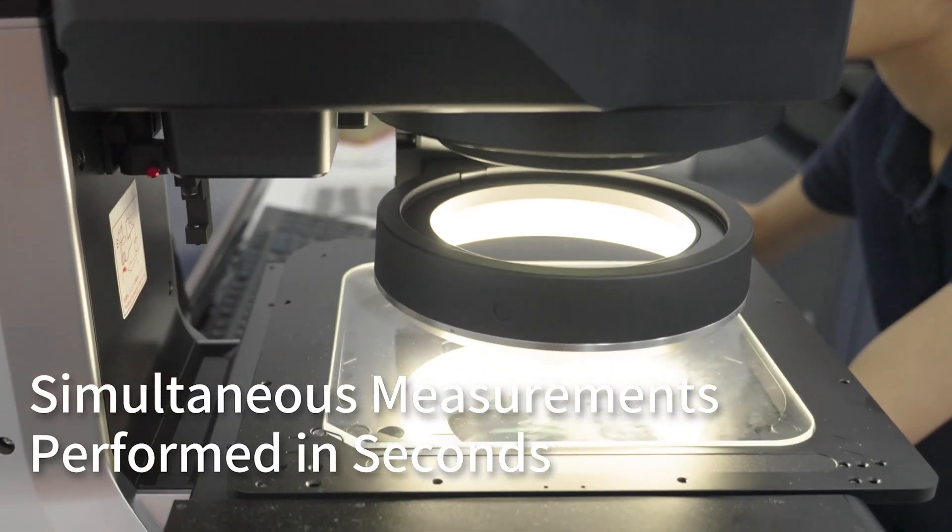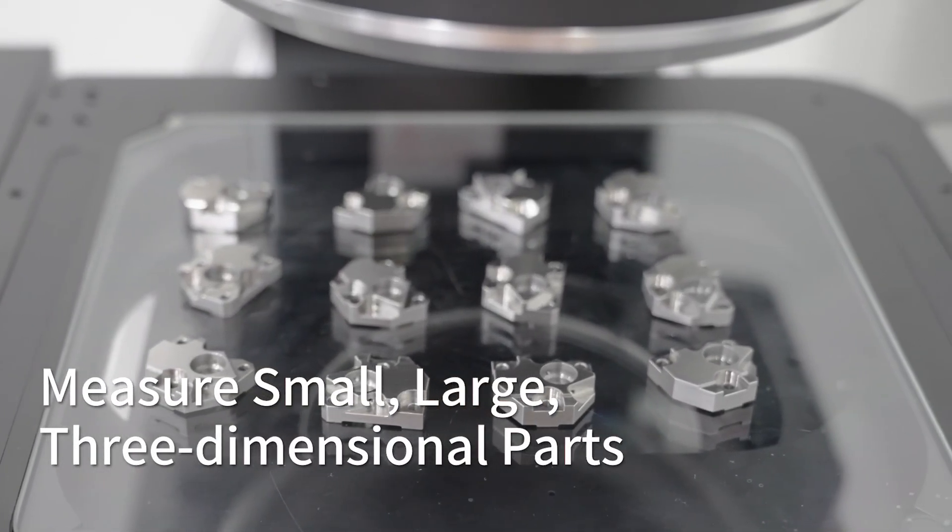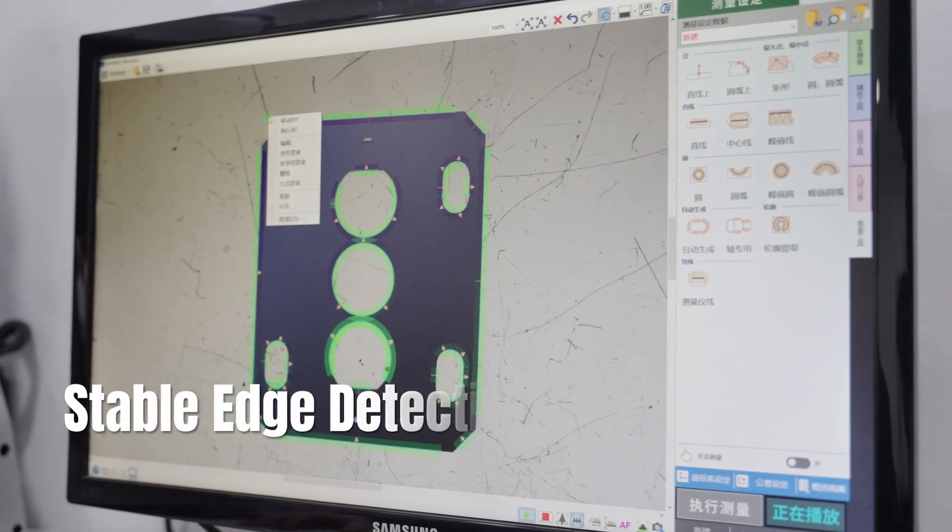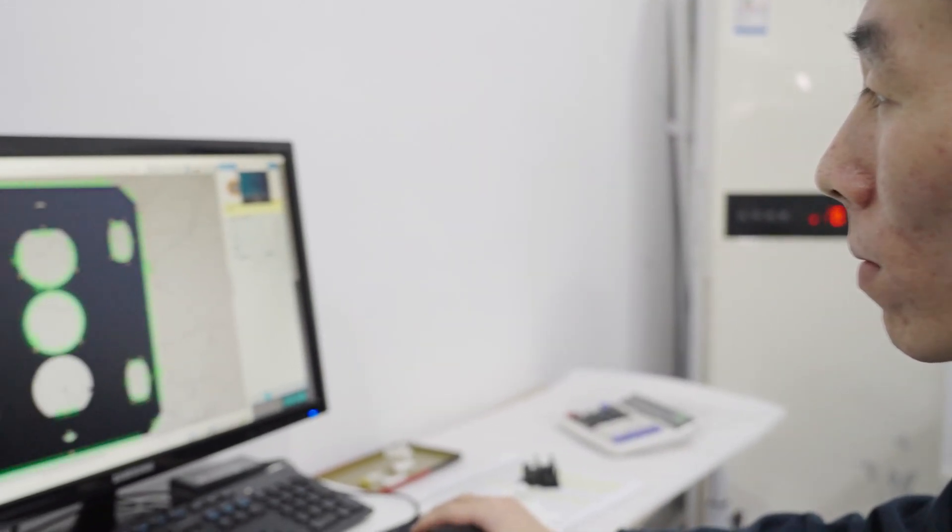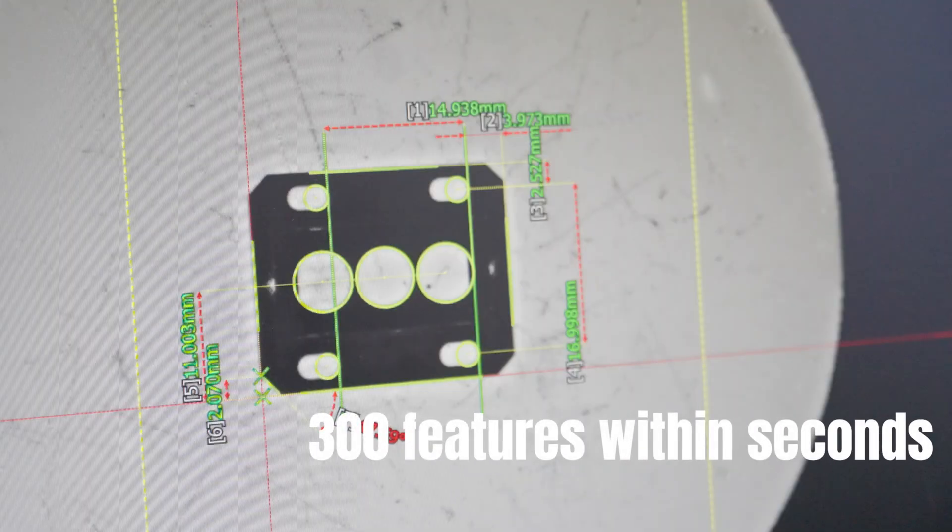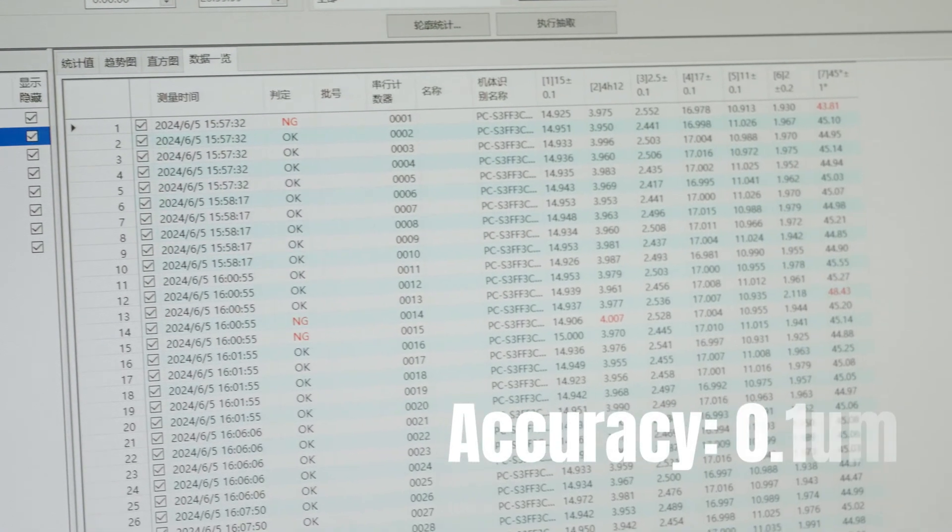I'll briefly introduce you to some key figures relating to this system. It features a 20-megapixel signal sensor and a new algorithm for stable edge detection. It's possible to measure up to 300 features within seconds with high accuracy. High accuracy can achieve one micron.